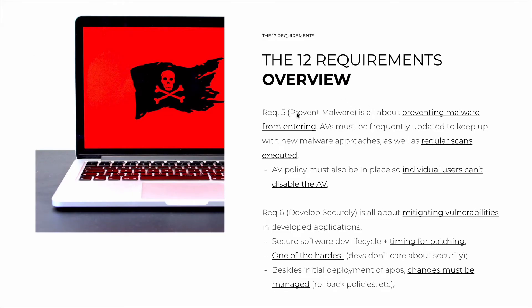Requirement 5, 'Prevent Malware,' is deceptively simple. You must have an antivirus solution that is frequently updated to keep up with new malware, as well as regular scans that are executed, and logs must be retained. It's also important that an access control policy prevents individual users from disabling the antivirus, because that would be a very big vulnerability. There can be exceptions, but exceptions must exist for a defined reason.